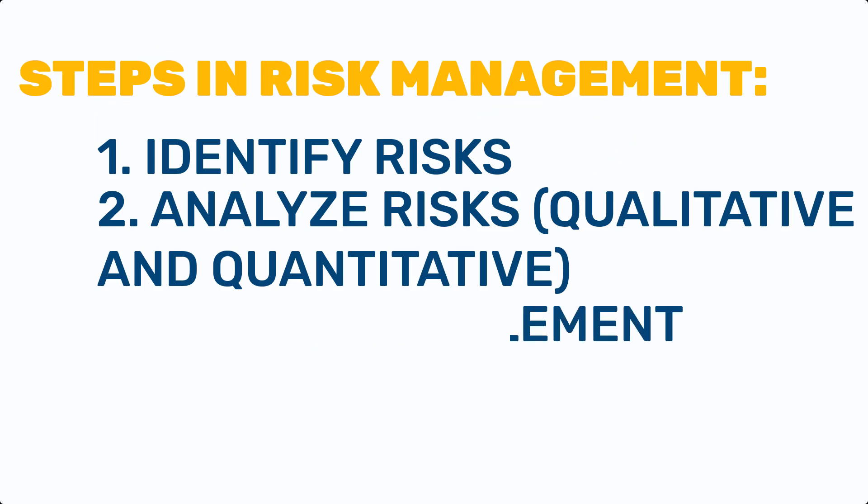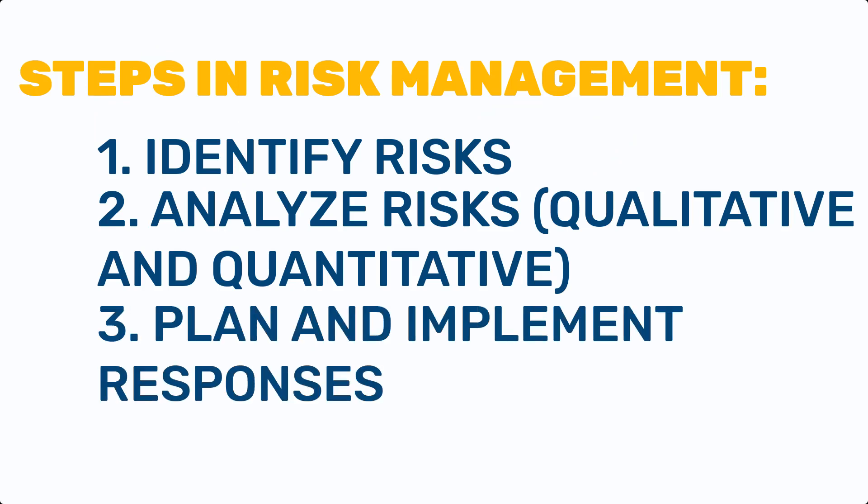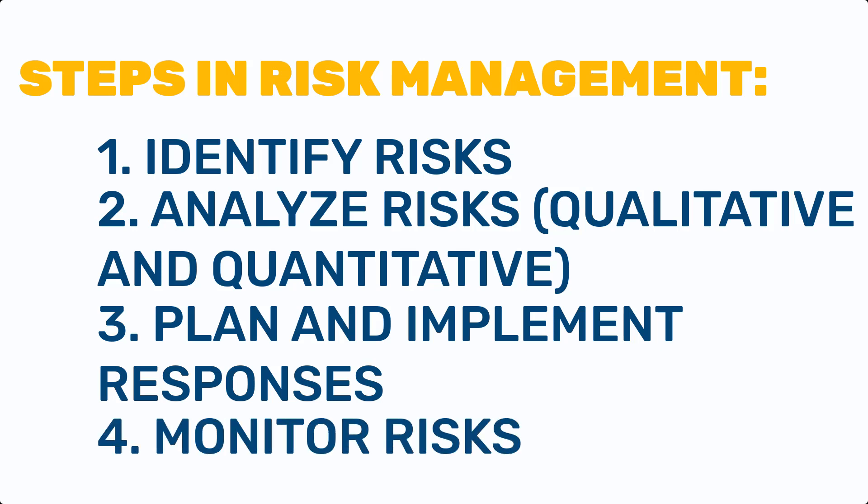The next step in risk management is implementing the risk responses, where you actually implement the plans that you have developed in the planning stage. The final step in the risk management process is risk monitoring and control. This involves tracking identified risks throughout the project and taking action as needed. Risk management is an ongoing process, and risks must be monitored and addressed throughout the project's life cycle.